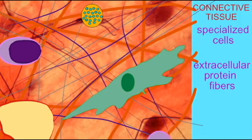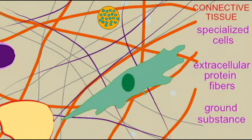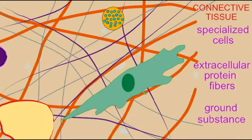And then finally, there is a ground substance, that material which fills in the spaces between the cells and fibers, whether it be watery, syrupy, or solid.